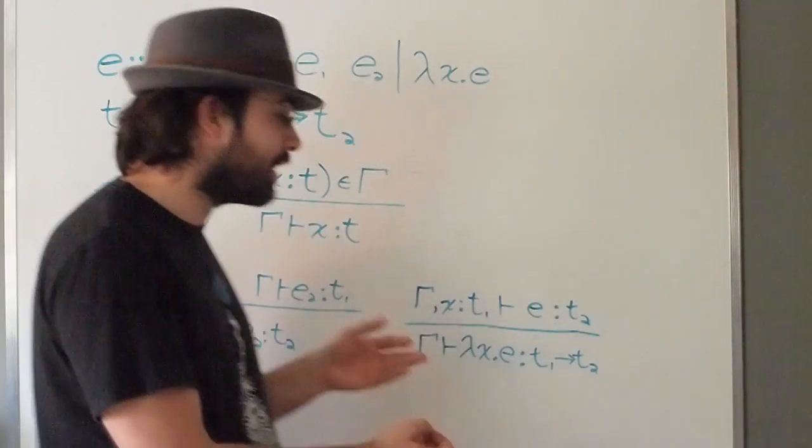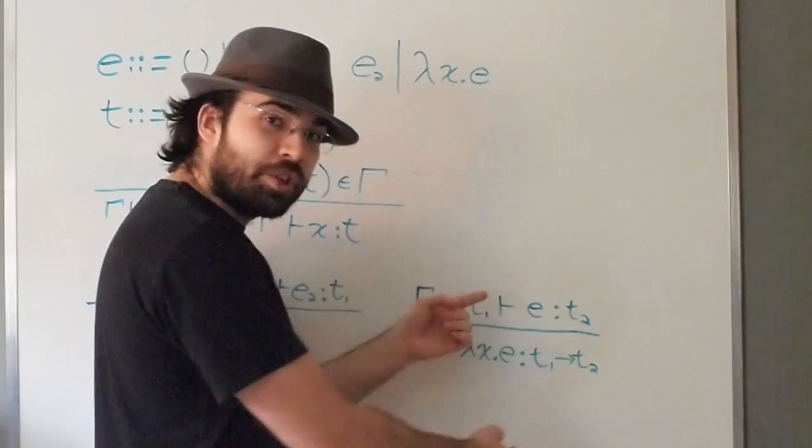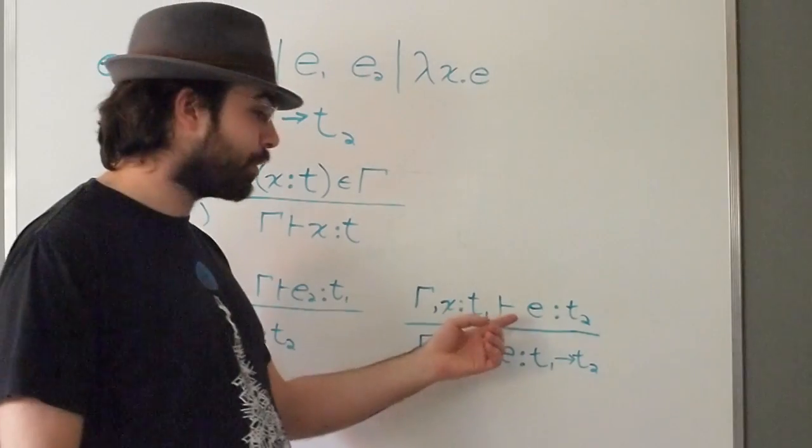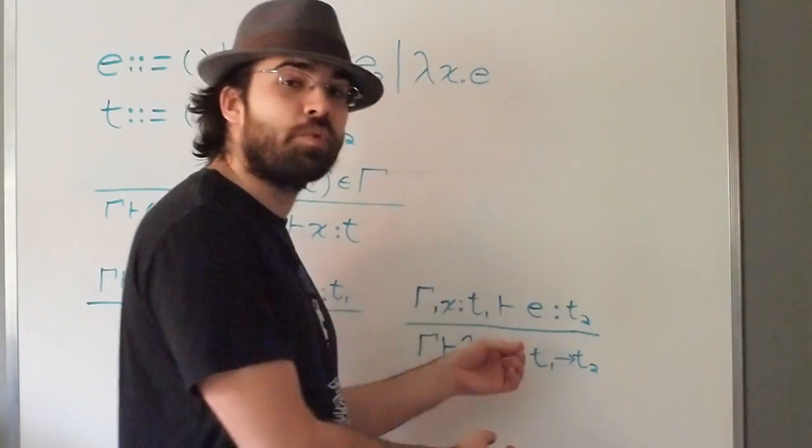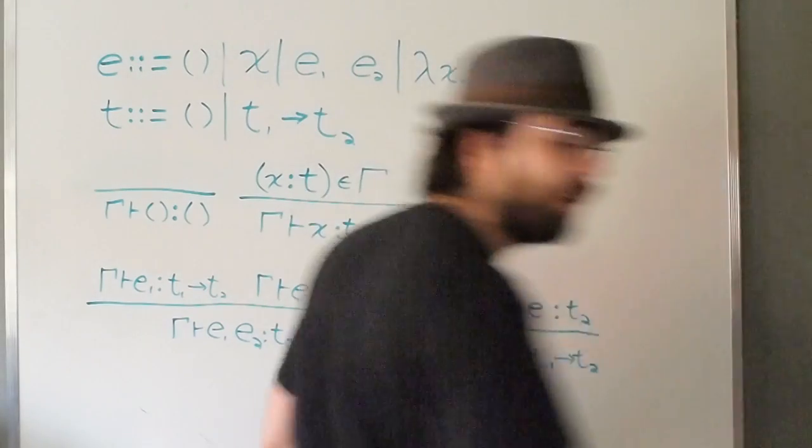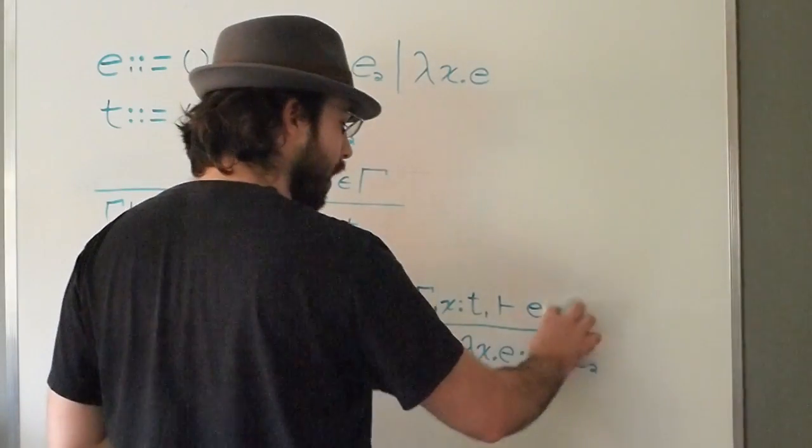If I wanted, I could modify those rules to define a different judgment. Instead of saying that such and such expression has this particular type, I could have a different judgment which says that such and such expression is well scoped. What would this look like? Well, I can remove all of the types everywhere.